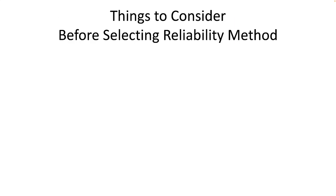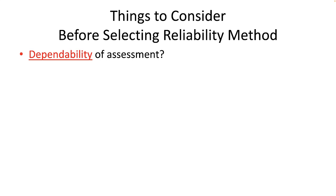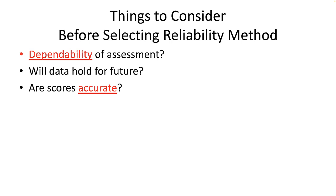Before choosing a particular reliability assessment technique, we must ask several questions: How dependably can people be assessed with a measure at a given moment? How dependably will data collected today represent the same people at a future time? If we expect changes in test scores over time because of learning effects, or because we hope the thing being measured will improve — like better job attitudes — or decrease — like less anxiety — then this will affect our choice of reliability method. How accurately will scores represent the true ability of people on the trait being sampled by a measure?